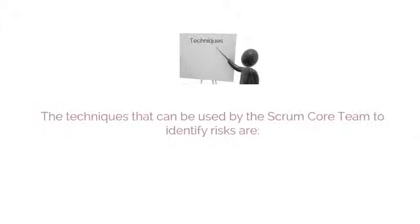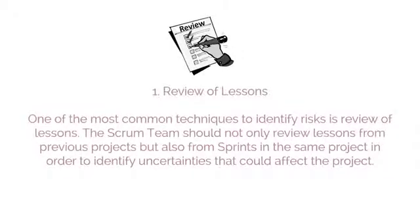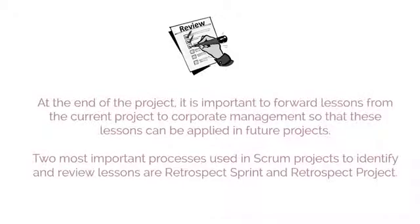Let's discuss how to identify risks. The first technique is review of lessons. The Scrum team should not only review lessons from previous projects, but also from sprints in the same project, in order to identify uncertainties that could affect the project. At the end of the project, it is also important to forward lessons from the current project to corporate management so they can be applied in future projects. The two most important processes used in Scrum projects to identify and review lessons are Retrospect Sprint and Retrospect Project.